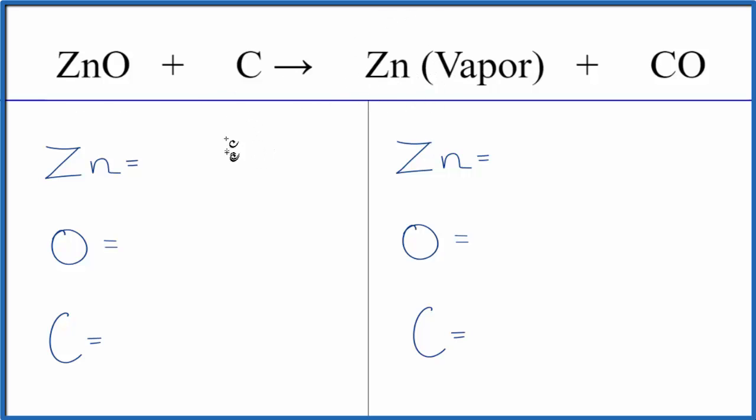To balance it, let's count the atoms up on each side and make sure everything's the same. We have zinc, one of those, one oxygen, and one carbon.